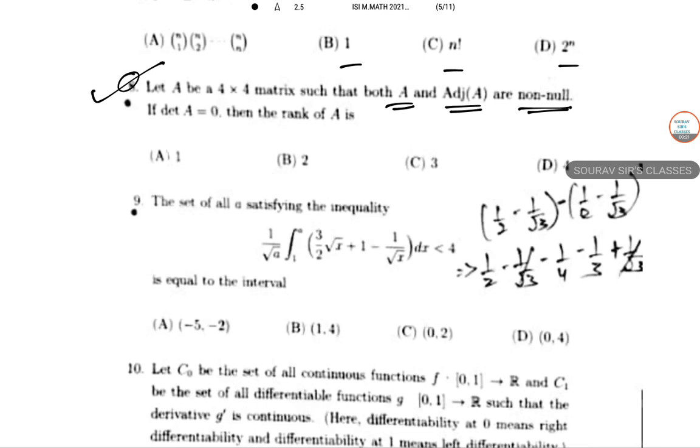Now one thing we need to know is that if we take the adjugate of A, this is nothing but equal to the cofactors of A, cofactors of the elements of A.